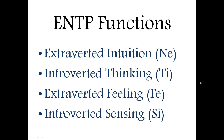Their fourth function is introverted sensing, or SI. This is something that never really becomes a strength for an ENTP, but they do have it. Basically, it deals with the past, remembering things, routine, and norms in society — understanding how things work and how things have always been.